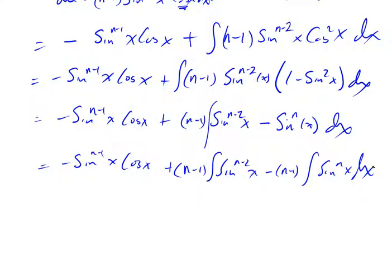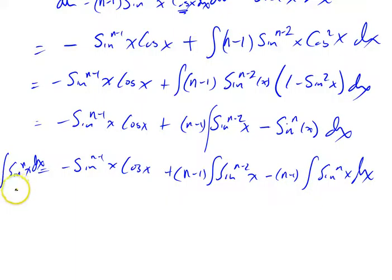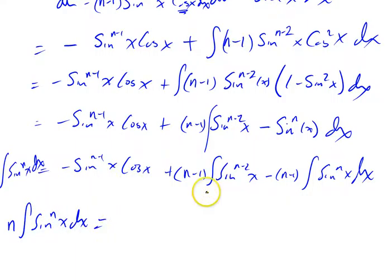Just like last time, I'm going to change that cosine squared x into 1 minus sine squared x. So I've got minus sine to the n minus 1 of x times cosine of x plus n minus 1 times the integral of sine to the n minus 2 of x times 1 minus sine squared x dx. Distributing through: minus sine to the n minus 1 of x times cosine of x, plus n minus 1 times the integral of sine to the n minus 2 of x, minus n minus 1 times the integral of sine to the n of x dx. We started this problem as the integral of sine to the n of x, and now at the end we have again an integral of sine to the n of x.